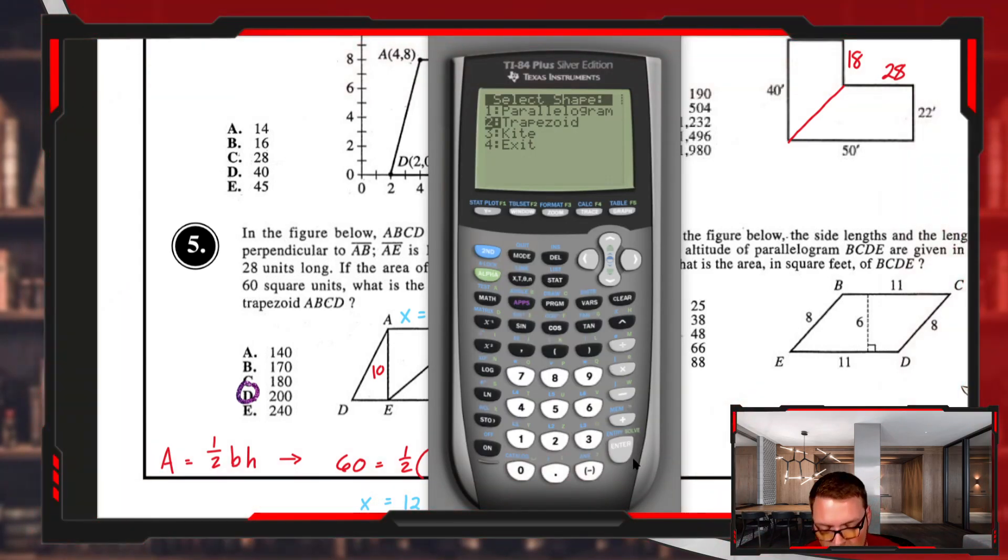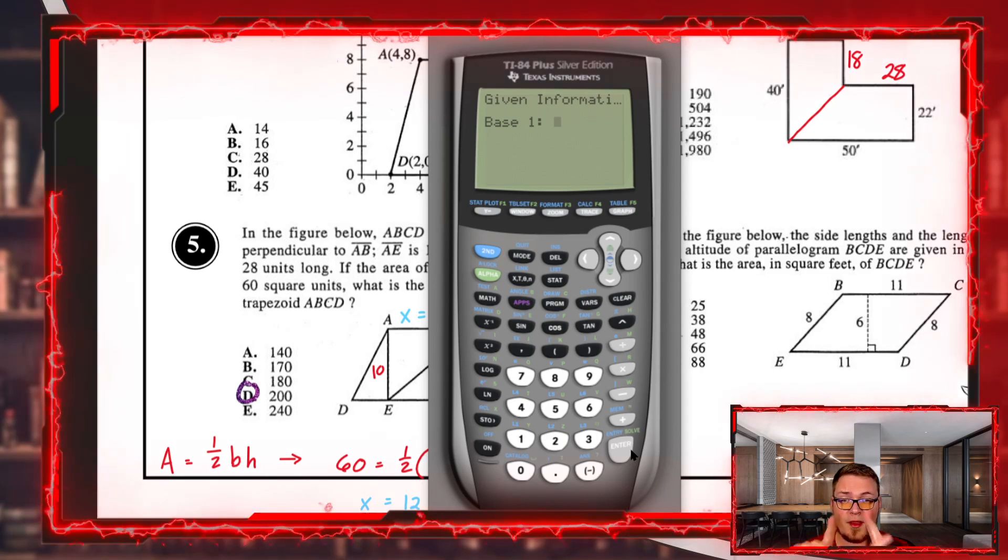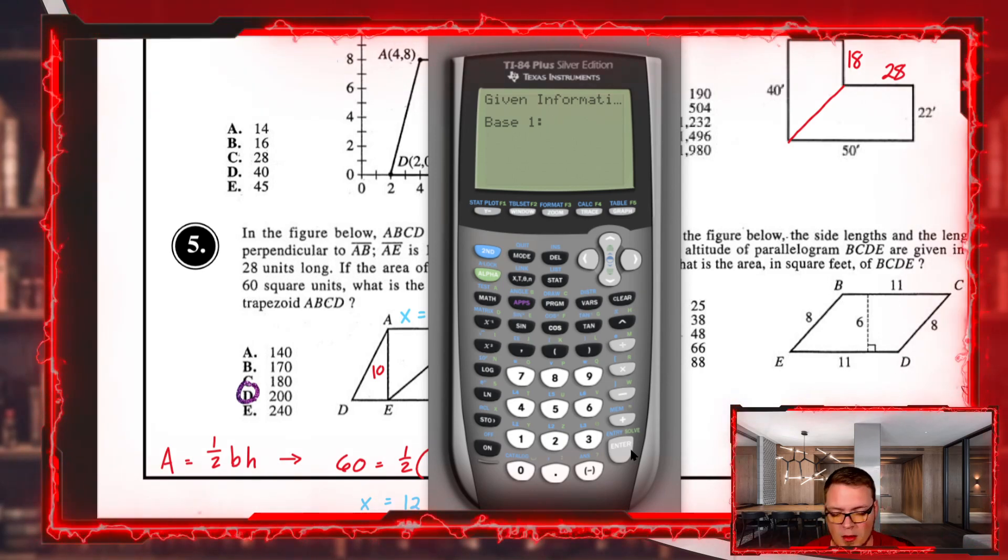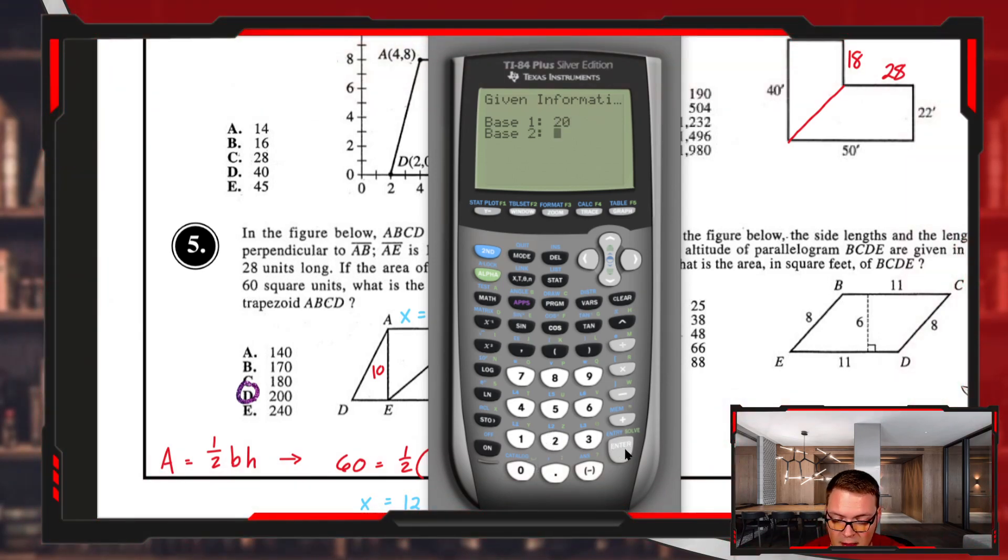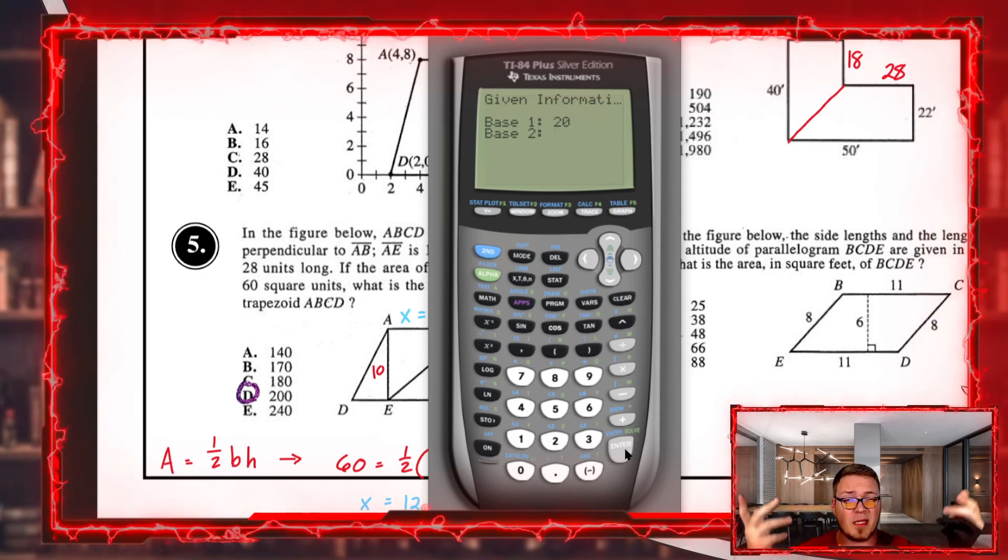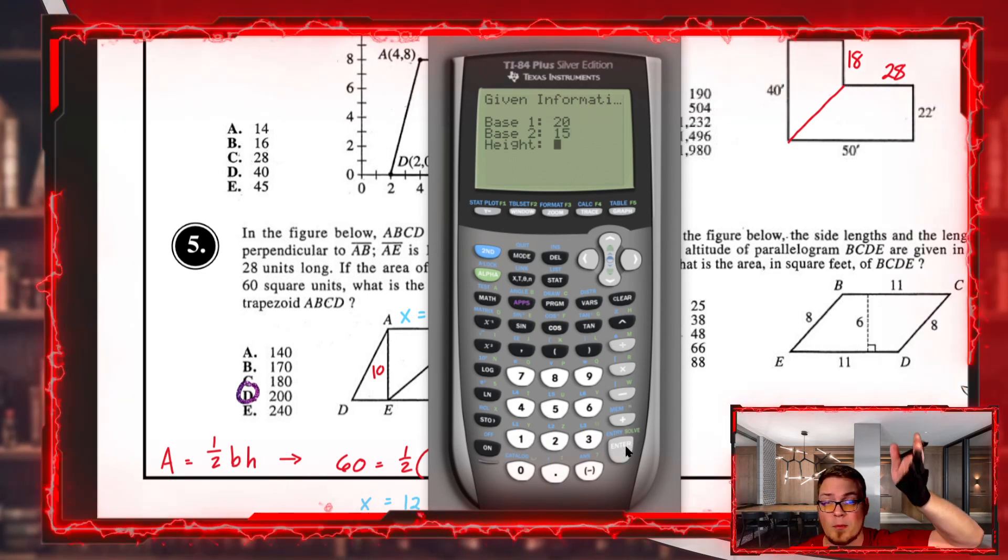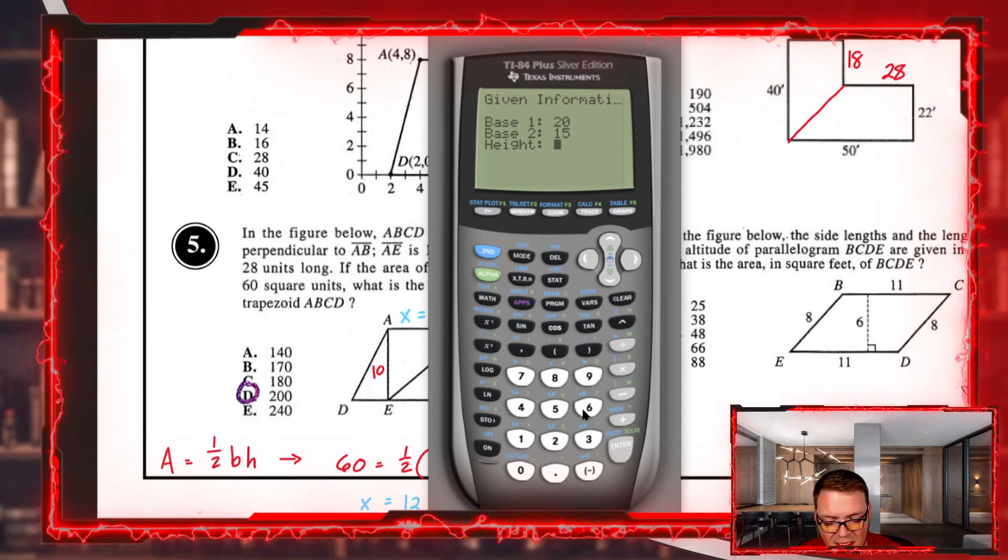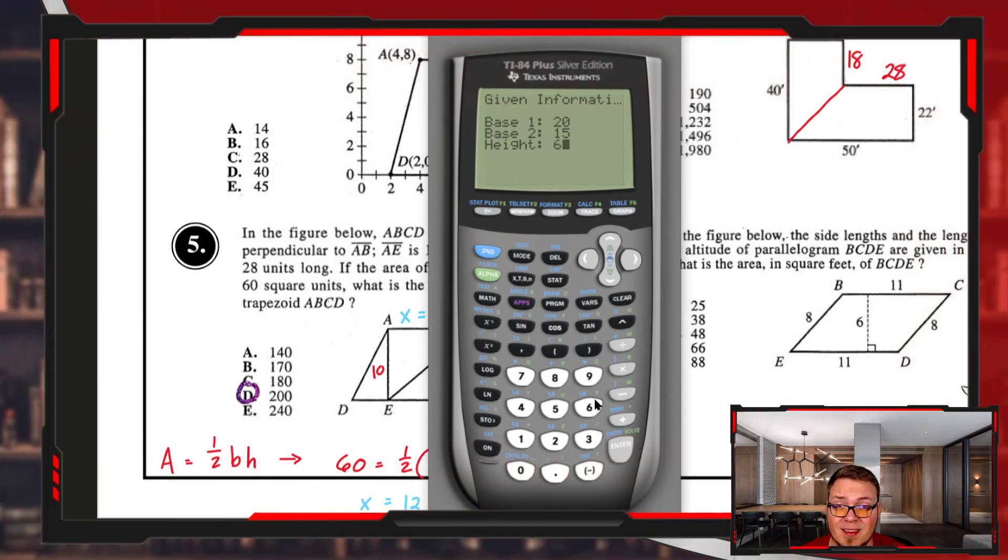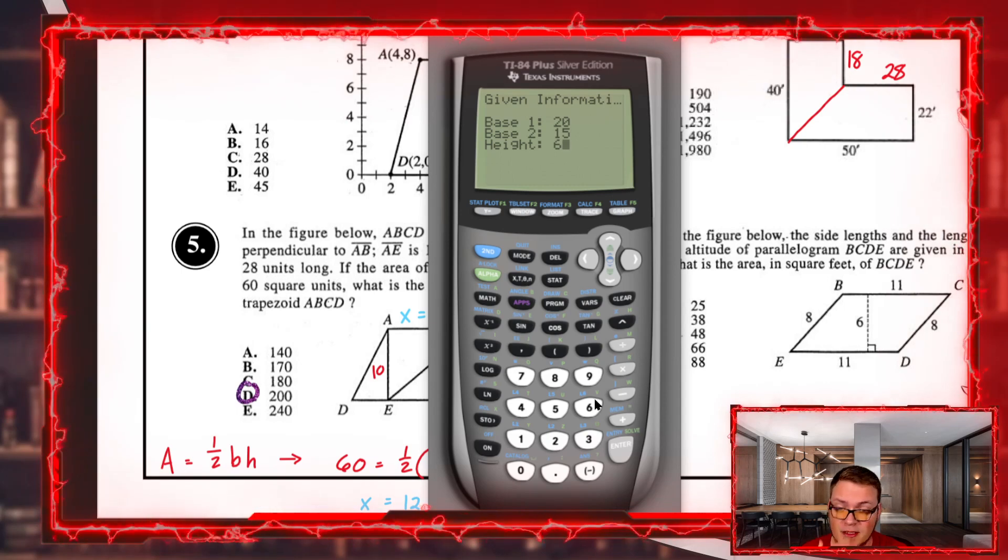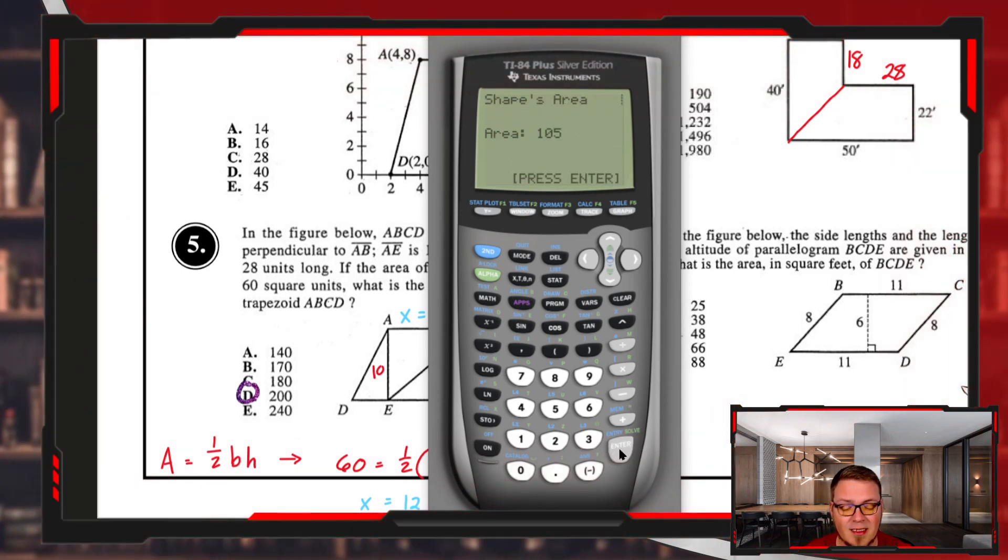To find the area of a trapezoid, it asks for the length of base one—maybe that's 20 units. Base two could be the top, maybe 15 units. The height is the perpendicular distance between the two bases. Let's call that six. If these are the measurements for my trapezoid, the shape's area is 100.